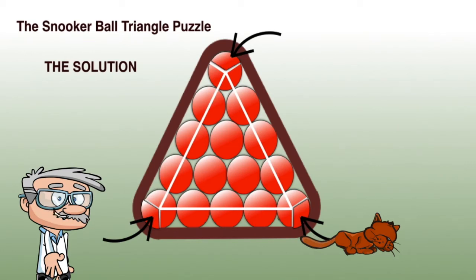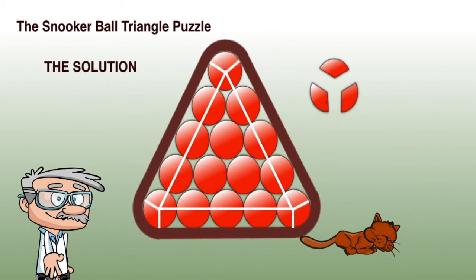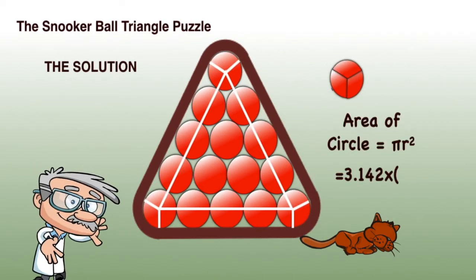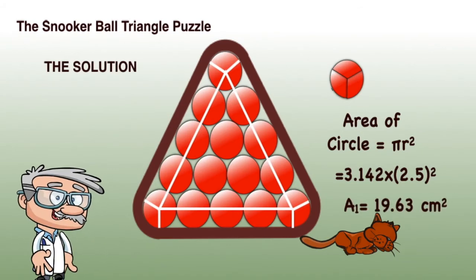The first thing to notice is that these three part circles in each corner are each, in fact, one third of a ball. The three round corners add up to one whole cross section of a ball, a circle. And the area of a circle is pi r squared.